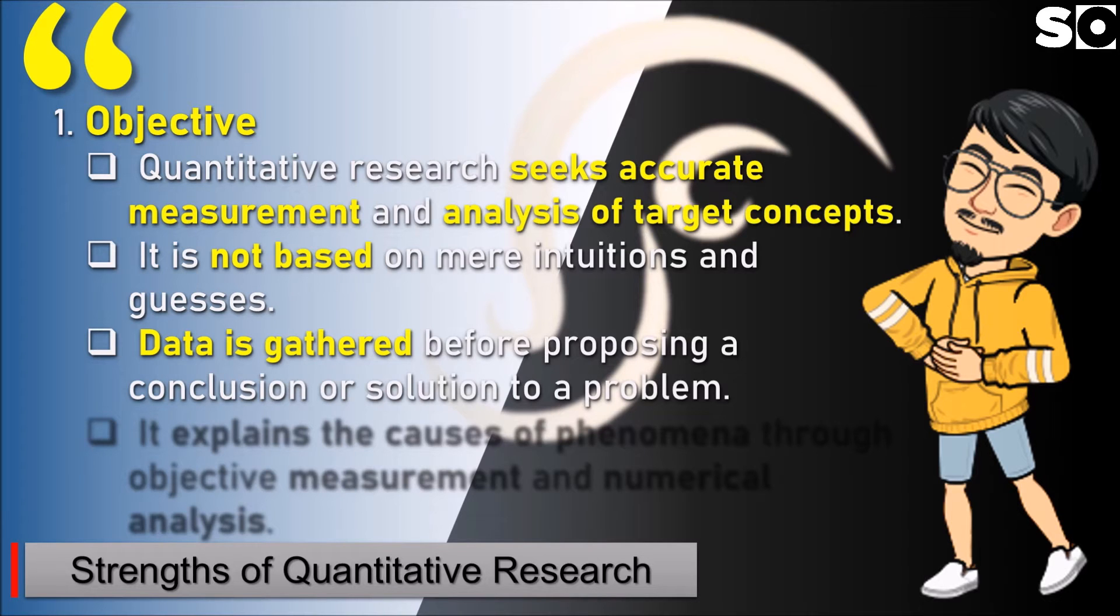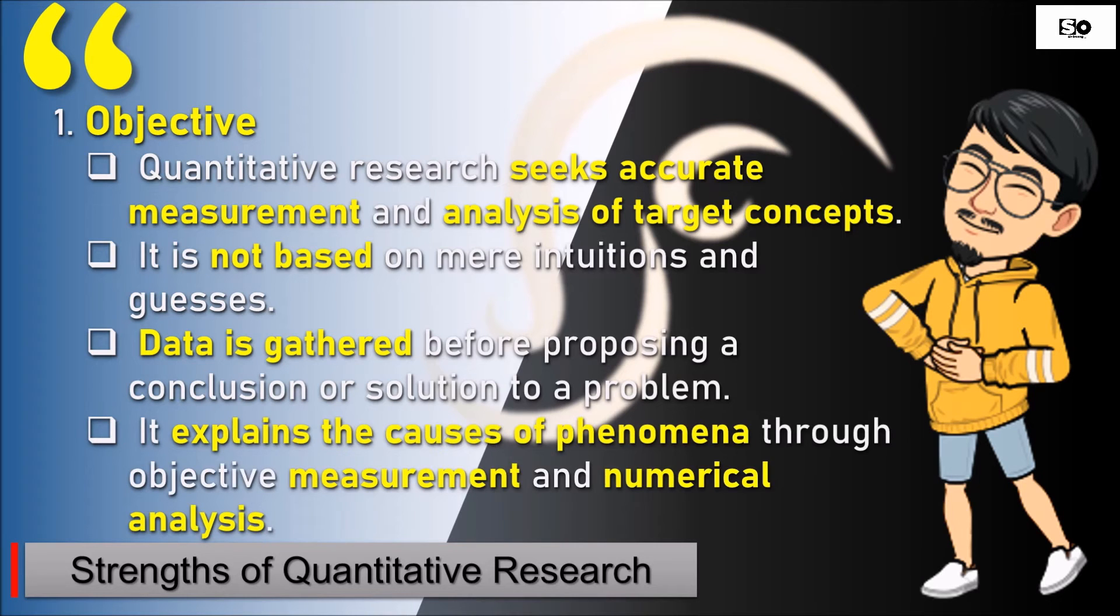Data is gathered before proposing a conclusion or solution to a problem. Before giving conclusions and solutions to our questions about the chosen problem, we must first gather information through survey questionnaires. It explains the causes of phenomena through objective measurement and numerical analysis. We seek meaning and deep understanding through the numerical data we obtain during the research process.